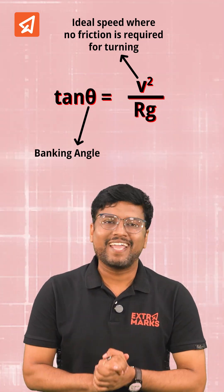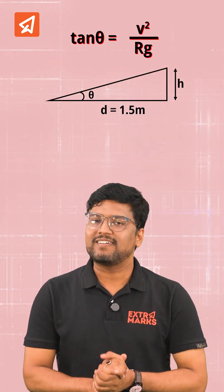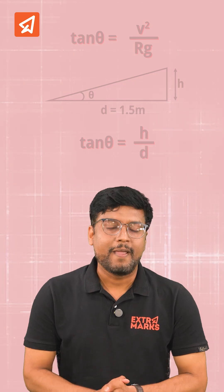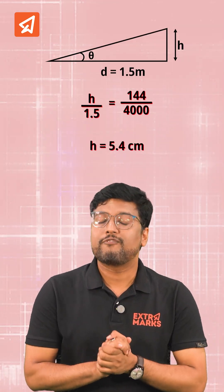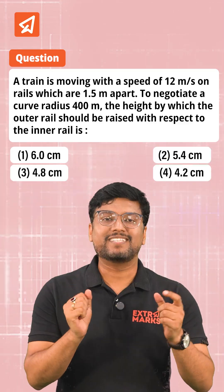Let's apply this concept to a JEE previous year question. Our key relation is tan θ = v²/rg, and the relation between the banking angle and height is tan θ = h/d. Comparing these two equations, we get height equal to 5.4 cm. So we solve the problem in just seconds.